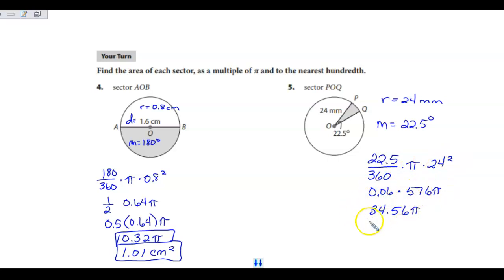When I multiply these, I get 34.56 pi. So this is in terms of pi. Now simplify and find the decimal rounded to the nearest hundredth.